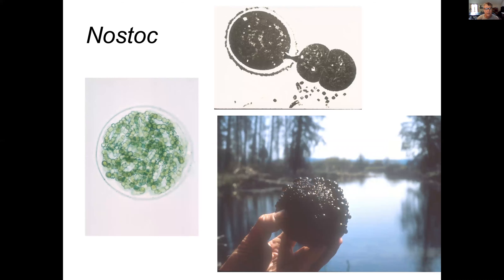This is Nostoc, another heterocystous one. It can grow in terrestrial habitats, re-wet, and it's fairly tough. You can see this dark blue-green color on the right and a lighter blue-green color on the left, but still an indicating color.